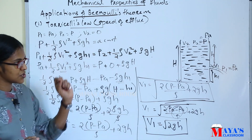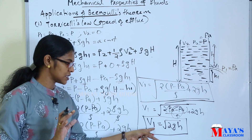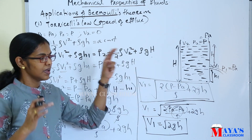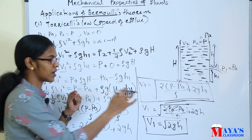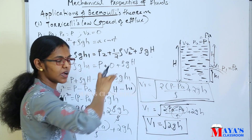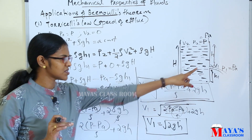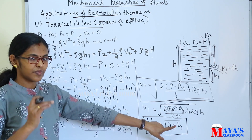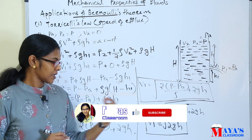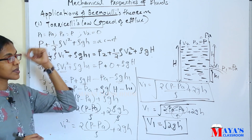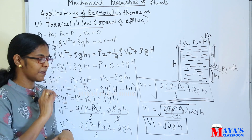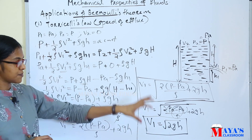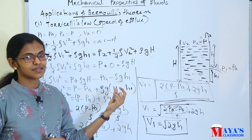Therefore, V1 equals the square root of 2gh. The speed of efflux for an open tank is V equal to root of 2gh, where g is the acceleration due to gravity and h is the height. This is the speed of efflux through a small orifice or small opening.